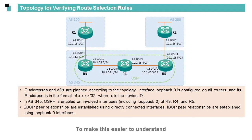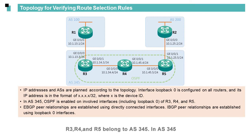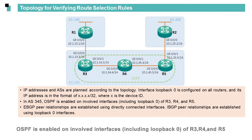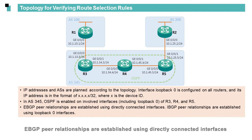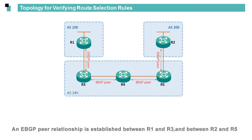To make this easier to understand, let's use experiment topologies to explain the route selection rules. In this topology, R1 and R2 belong to AS100 and AS200 respectively. R3, R4, and R5 belong to AS345. In AS345, OSPF is enabled on involved interfaces, including loopback 0 of R3, R4, and R5. EBGP peer relationships are established using directly connected interfaces, and IBGP peer relationships are established using loopback 0 interfaces. An EBGP peer relationship is established between R1 and R3, and between R2 and R5.